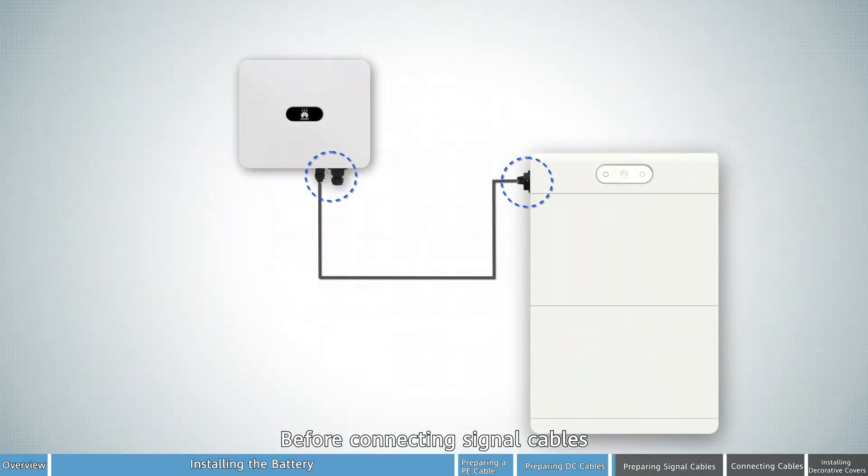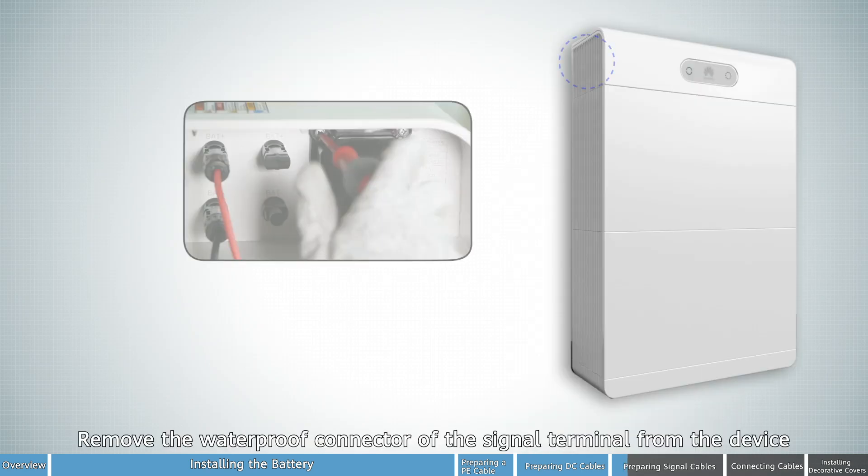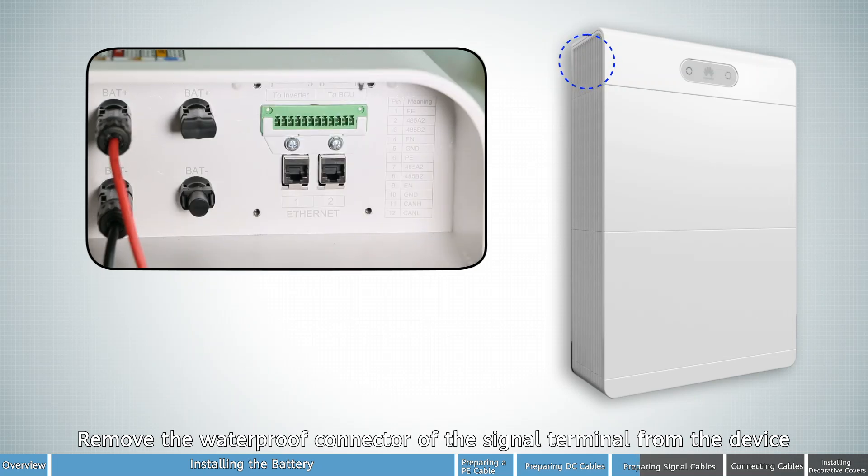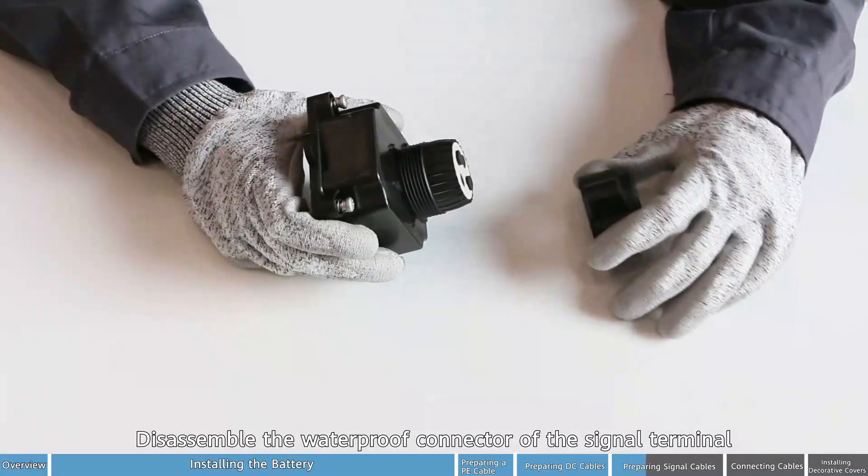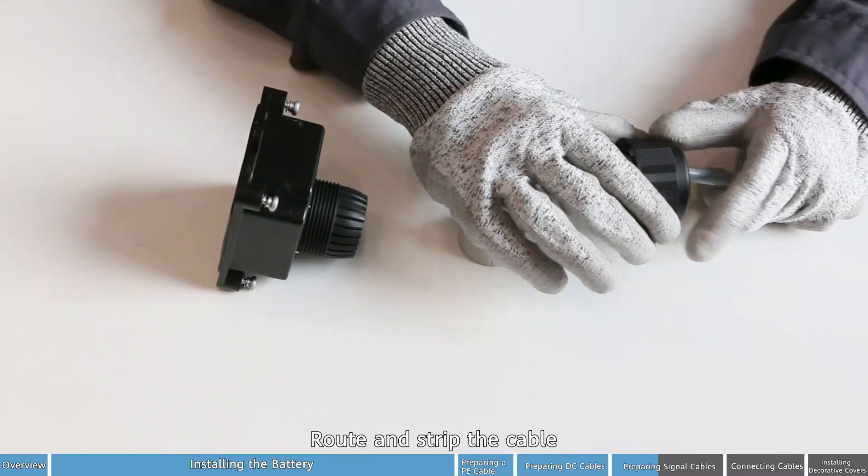Before connecting signal cables, let's see how to prepare the signal terminal. Remove the waterproof connector of the signal terminal from the device. Disassemble the waterproof connector of the signal terminal. Route and strip the cable.